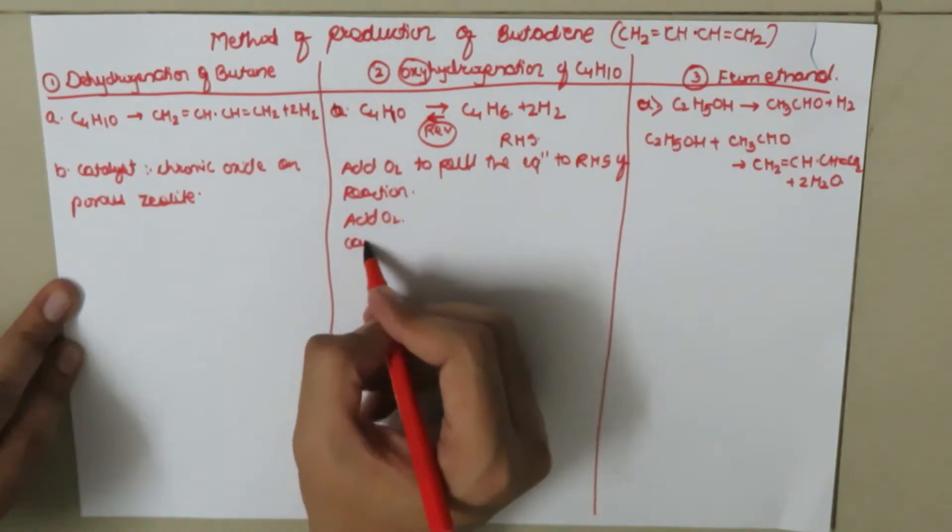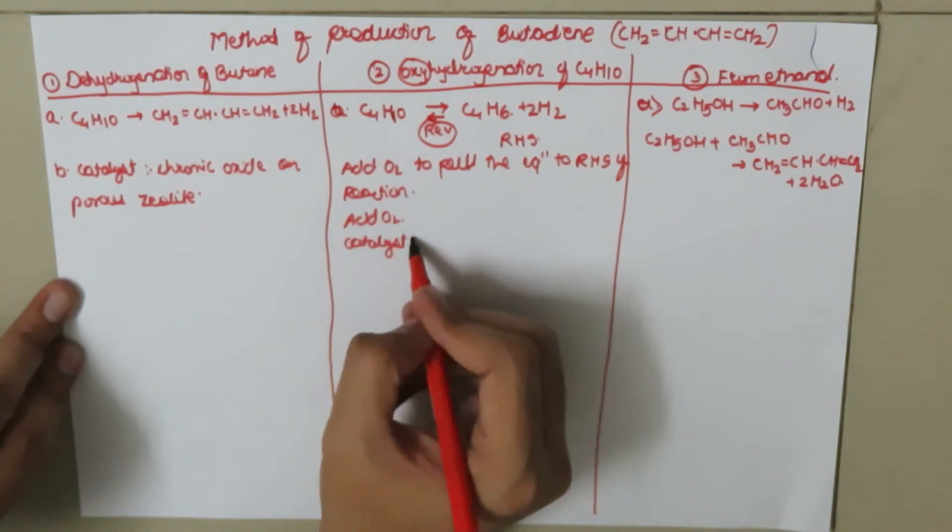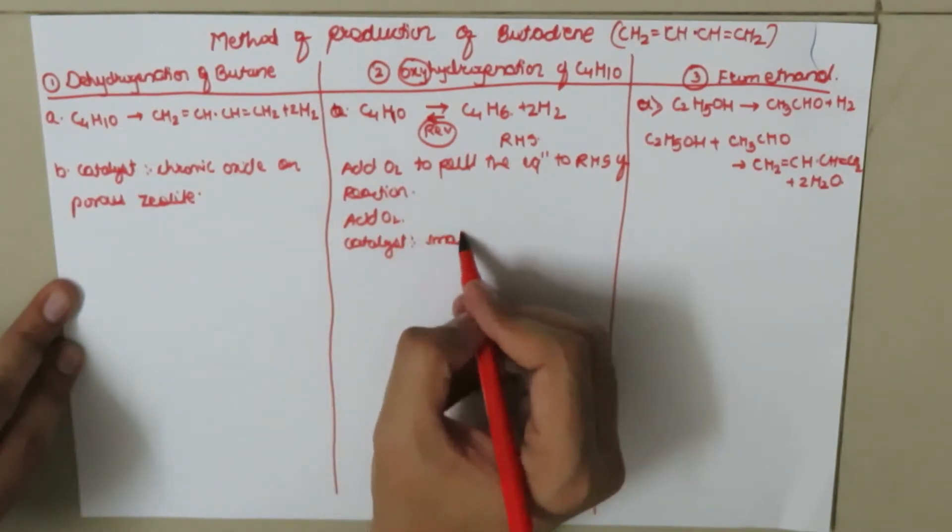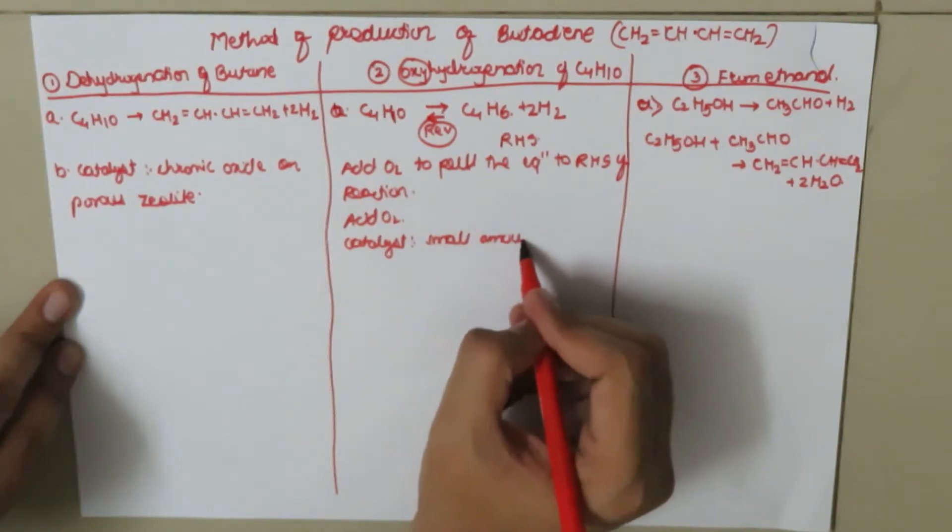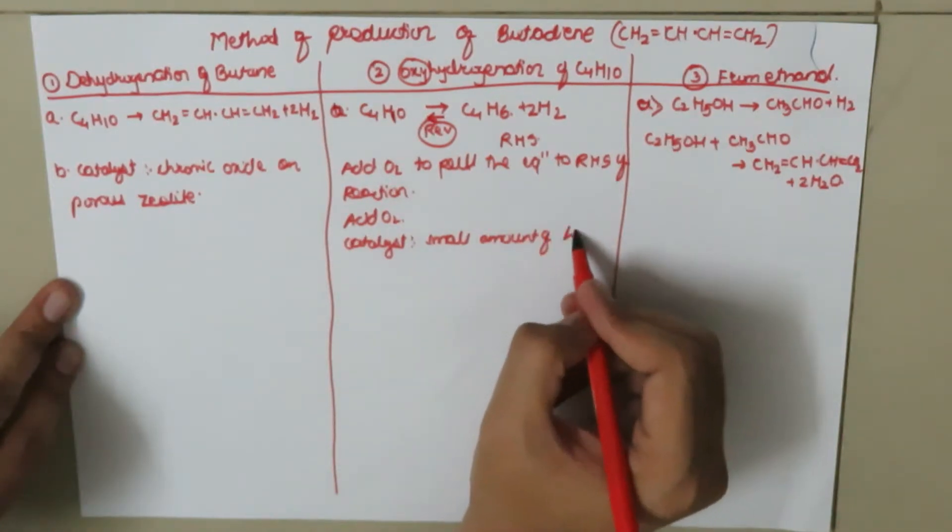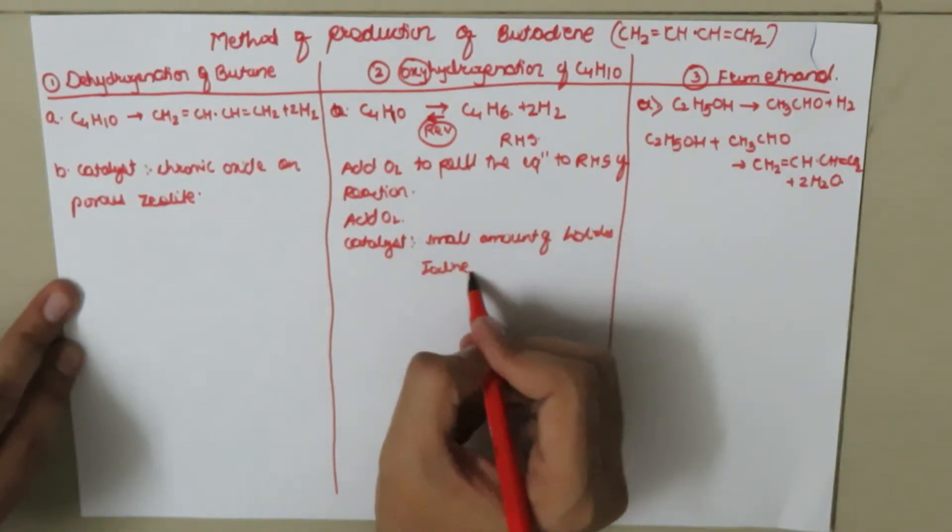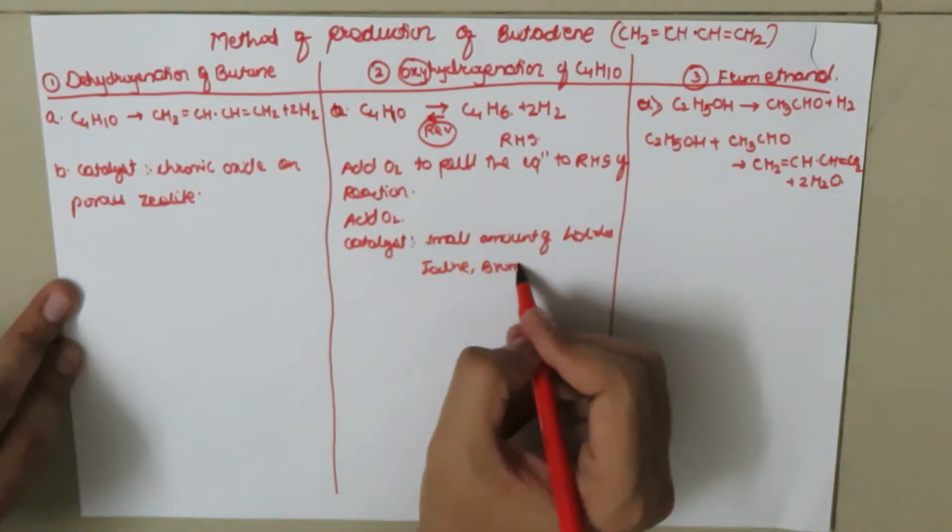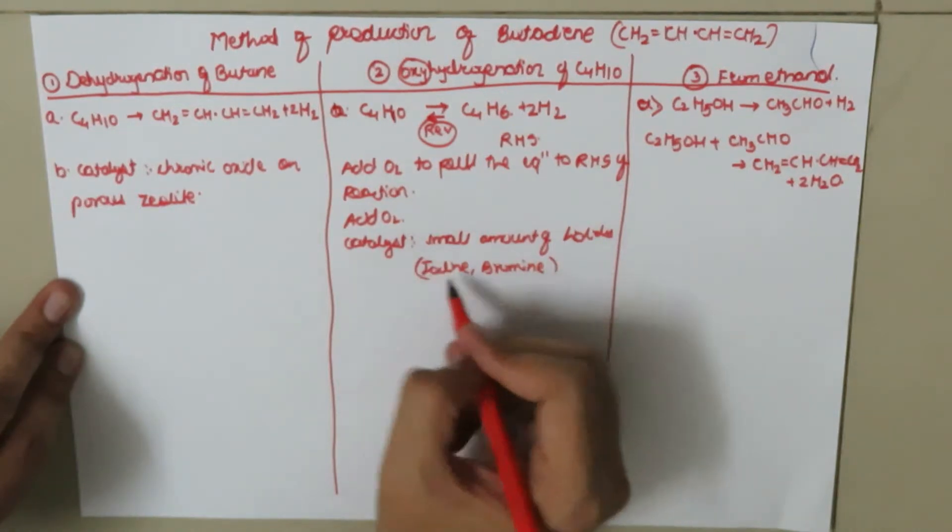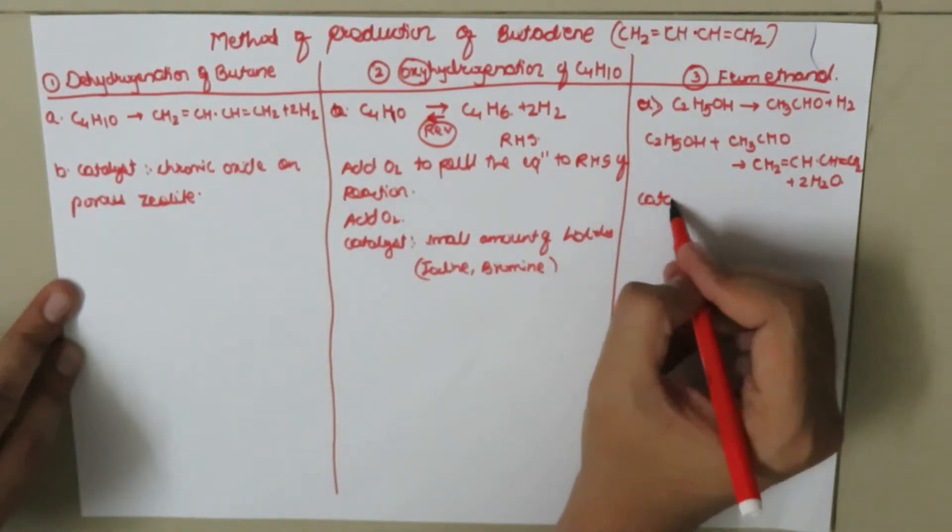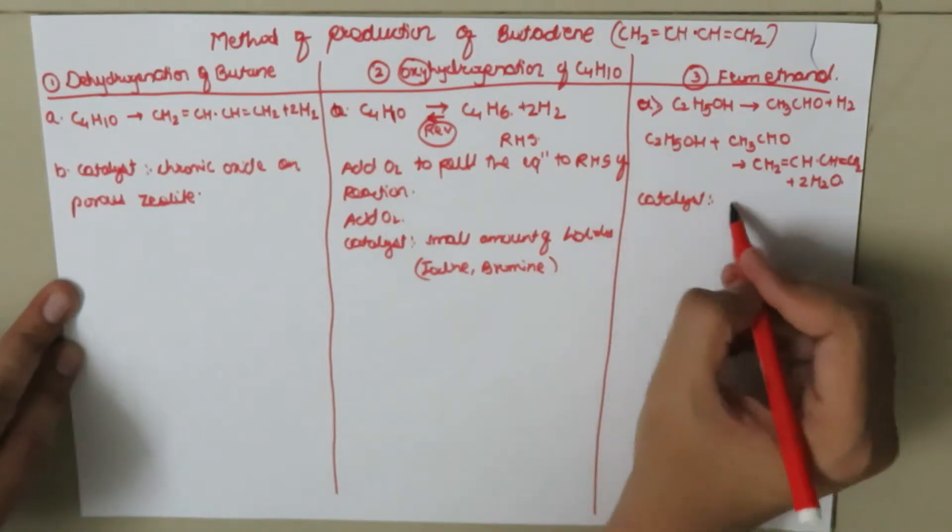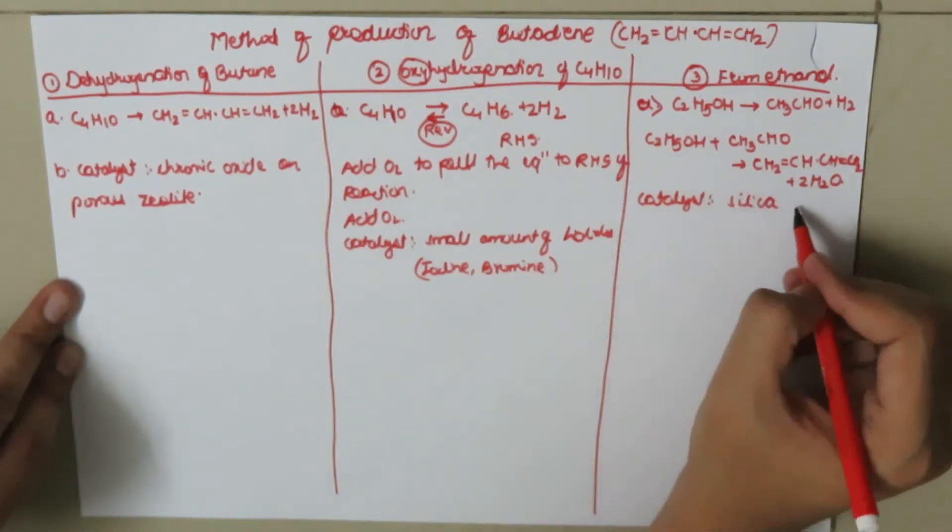Therefore, the process itself is known as oxyhydrogenation of C4H10. We need to add oxygen, and the catalyst used is a small amount of halides, mainly iodine or bromine. In this process, the catalyst used is silica-tantala catalyst.